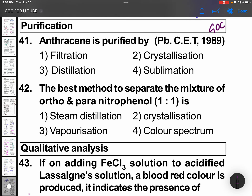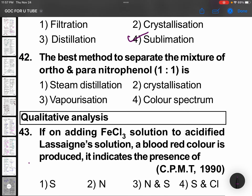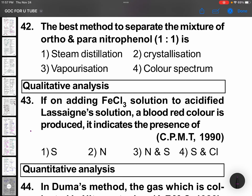A few questions about GOC assignment number 7. Anthracene is purified by direct sublimation. Anthracene, naphthalene — all these undergo sublimation.